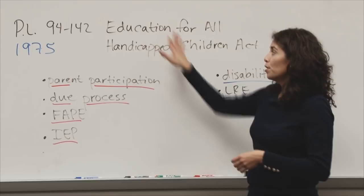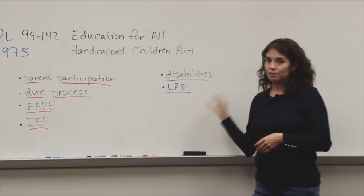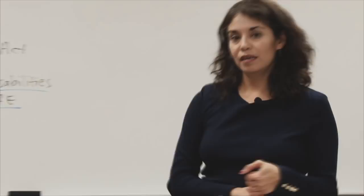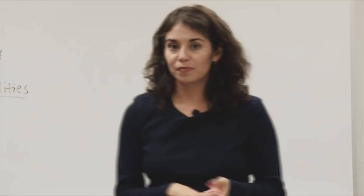The third topic is FAPE: Free Appropriate Public Education. Just like it sounds, it's the right of the student to have a free, appropriate public education. Prior to the law passed in 1975, students with disabilities didn't have a right to go to school — there were no services for them. The idea of FAPE is that they now have a right to go to school, to be educated by someone highly trained in that area, and to attend school for free, just like every other student.